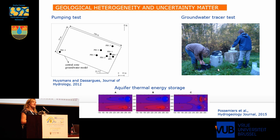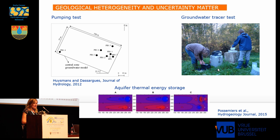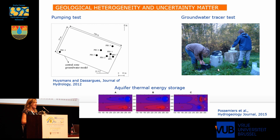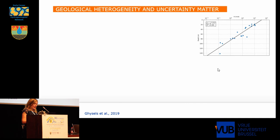After we established that, we applied these models on many different applications. For example, we interpreted a pumping test taking this heterogeneity into account and without it, and we could see that these clay drapes result in an anisotropic pumping cone. If we would not take this effect into account, we would have erroneous results. We also did a groundwater tracer test where we could see that these clay drapes affect how the tracer moves in the subsurface. We also did calculations to see how these clay drapes would affect the efficiency of aquifer thermal energy storage, and there too, the anisotropy generated resulted in differences in efficiency.